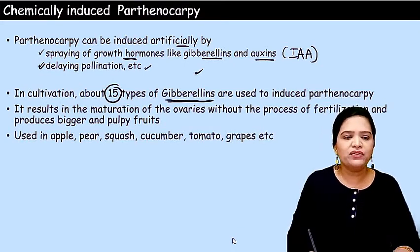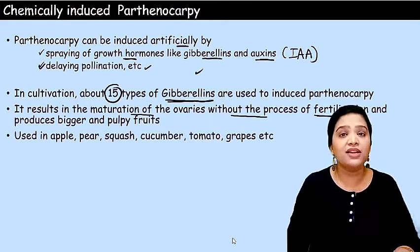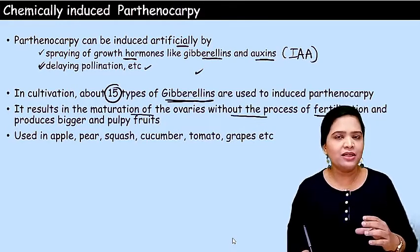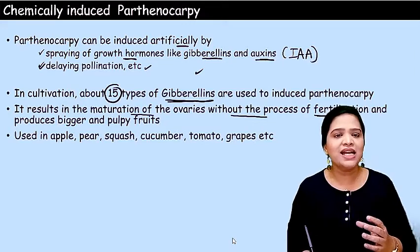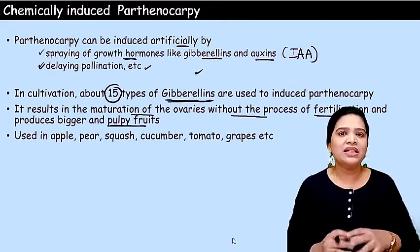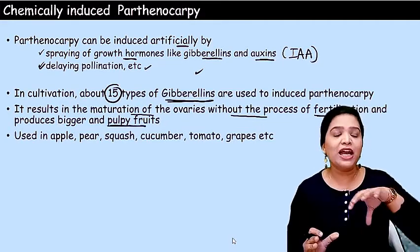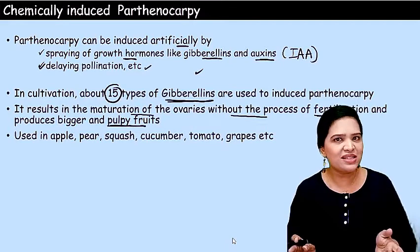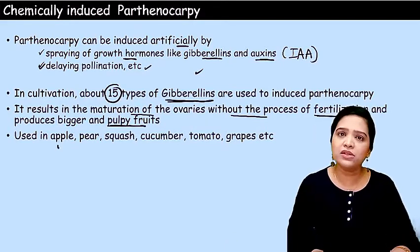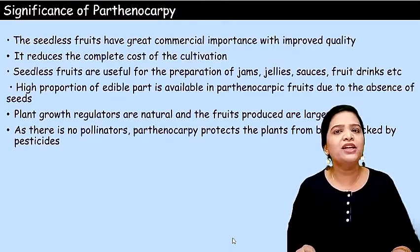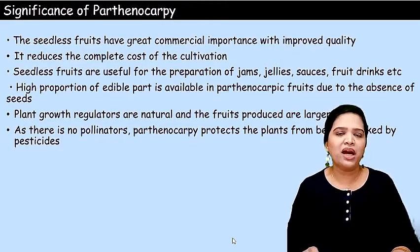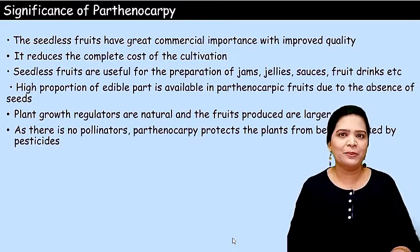As a result, maturation of the ovaries occurs without fertilization. The fruits produced are larger in size, pulpy, and have more flesh without seeds. Many varieties of apple, pears, squash, cucumber, tomato, and grapes that we get in markets nowadays are produced through parthenocarpy.